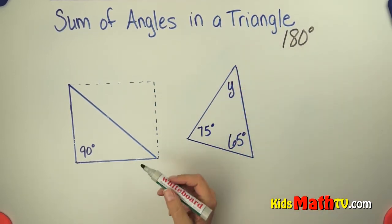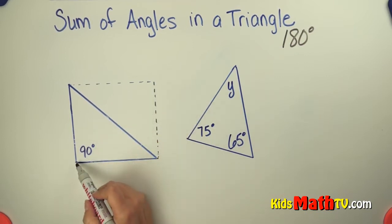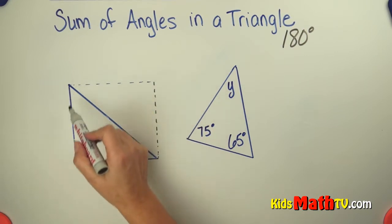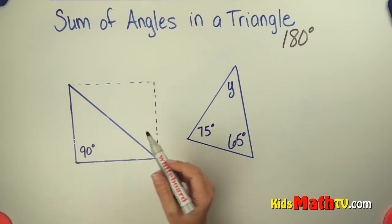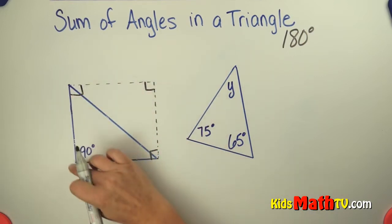The reason that works is a triangle is always half of a rectangle. This is a rectangle. It has a 90 degree angle here, and by definition that means all of the angles are 90 degrees.